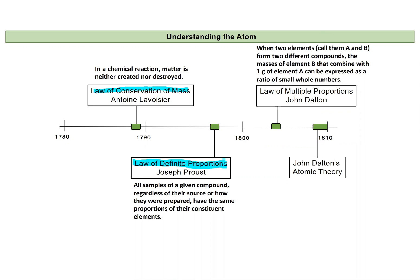The law of definite proportions states that all samples of a given compound, no matter where you get them from or how they're prepared, will have the same proportions. So that means things like water is always two hydrogen atoms and one oxygen atom, or H2O — no matter where you get that water, that's what defines water.